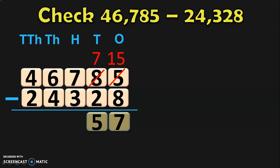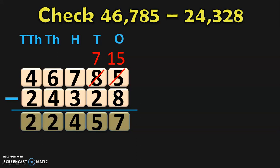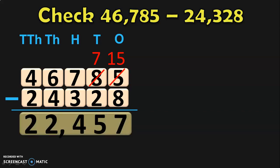In tens place it is 7 minus 2, which gives you 5. Now move on to the hundreds place where you have 7 minus 3, which gives you 4. Next in the thousands place it is 6 minus 4, which gives you 2, and in the ten thousands place it is 4 minus 2, which gives you 2. So the subtraction of the two five-digit numbers gives you the answer 22,457.